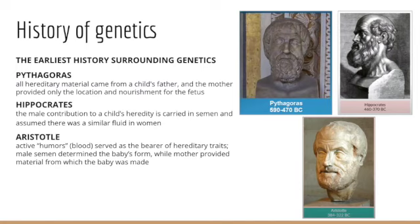To understand the earliest study of genetics, we actually need to go back to Greece during the Classical period. The first philosopher we'll consider is Pythagoras, who lived between 570 and 490 BC. He surmised that all hereditary material came from the child's father — not a new concept at this time. The mother provided only the location and the nourishment needed for a growing fetus, with the man's semen being that proverbial cocktail of hereditary information, collecting fluids from every organ to create everything needed for the growing fetus.